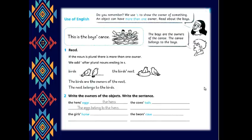Let's do this exercise. Write the owners of the objects. Write the sentence. The hens' eggs. Who's the owner? The hens. And the eggs belong to the hens. The girls' horse. Who's the owner? Excellent. The girls.